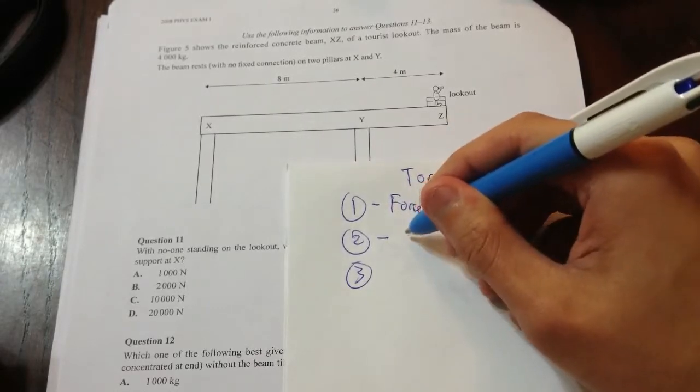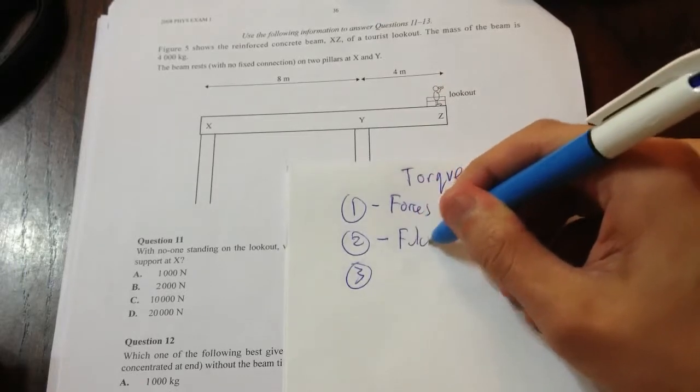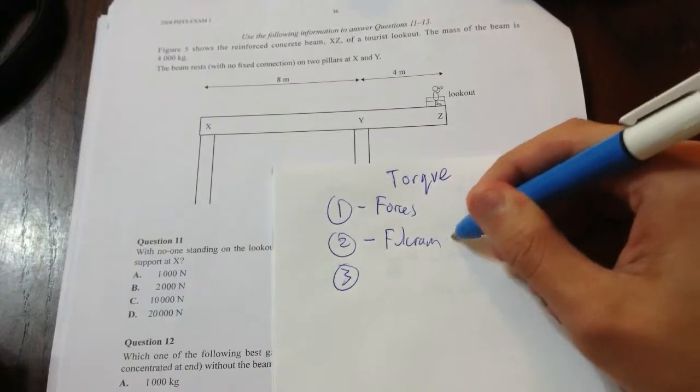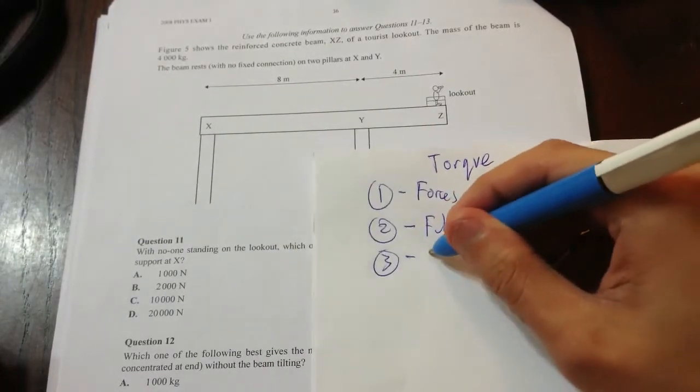Step two, choose a point where it doesn't move. Choose your point of fulcrum. It's called a fulcrum. It may confuse you, but just think of it as this little point, the axis. Axis might make more sense. And step three, write in your torques.